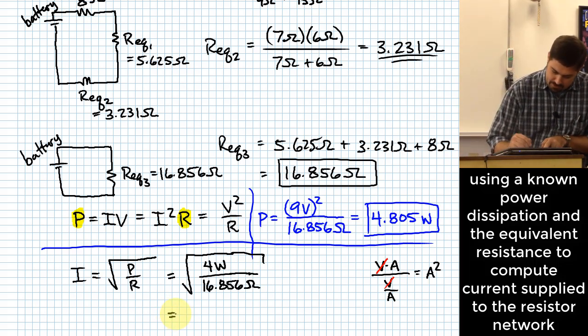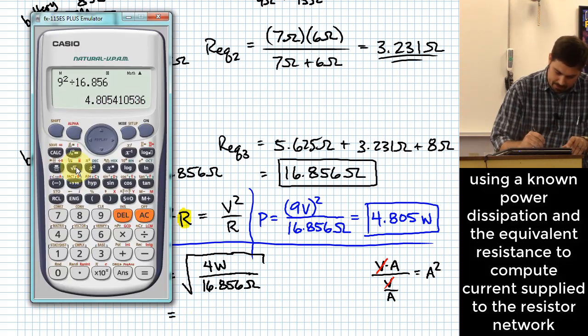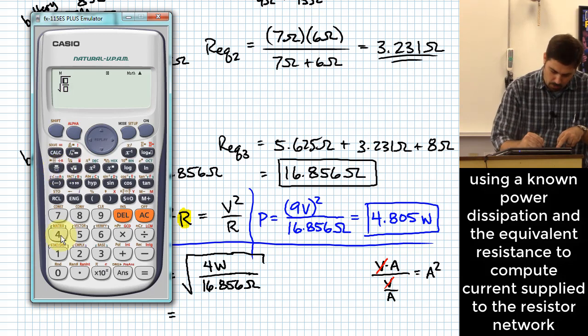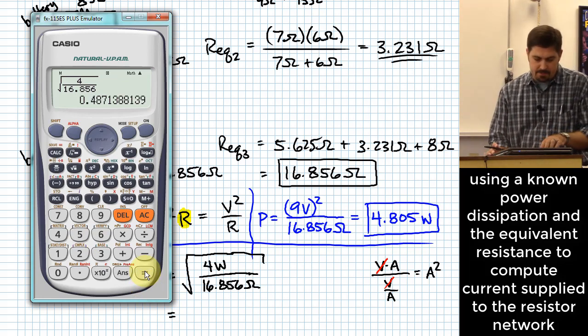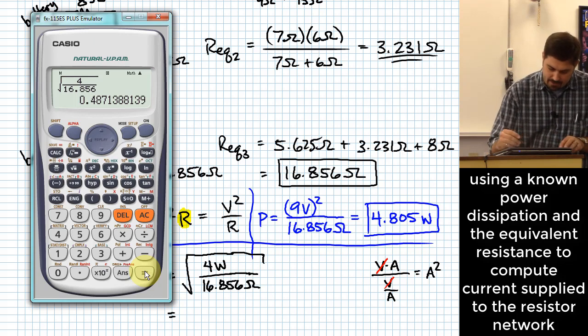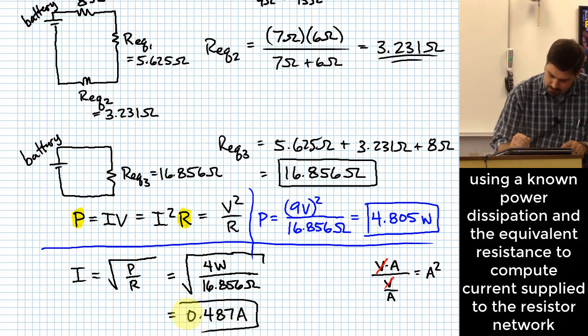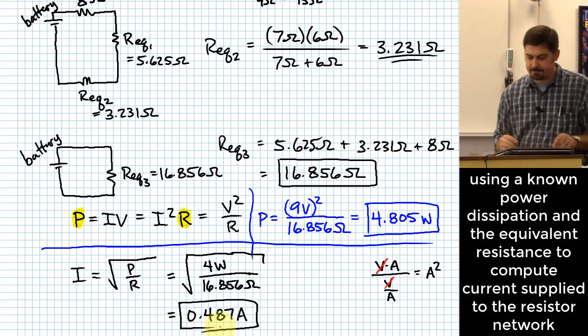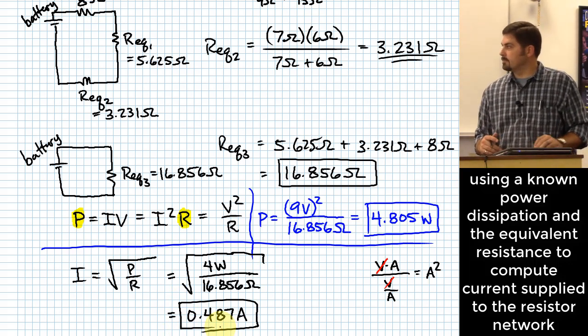So now we plug this in. And I ends up being the square root of 4 over 16.856. So that means it'll need 0.487 amps to dissipate that much power.